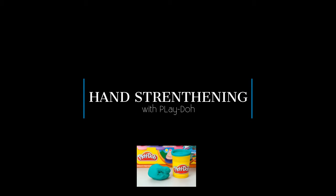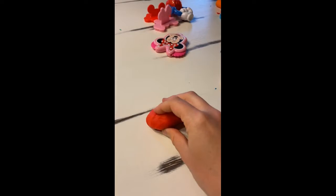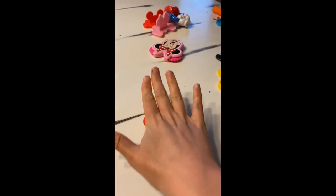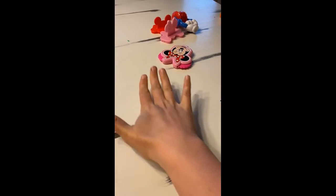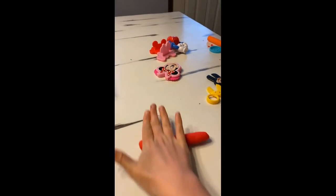Hand strengthening with Play-Doh. Exercise number one. Take a piece of Play-Doh and using the palm of your hand, roll the Play-Doh out into a nice long snake.